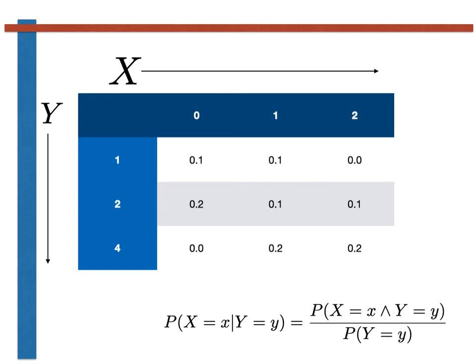To calculate the conditional distribution of X given Y equals small y, we first need to calculate the marginal distribution for Y by summing each of the rows individually as shown here. Once that is done, we take the elements of the joint probability mass function from the table and divide them by the elements of the marginal.